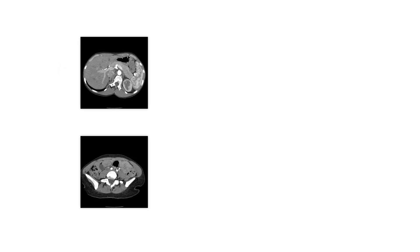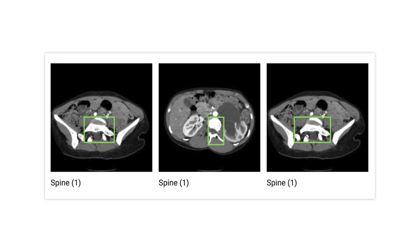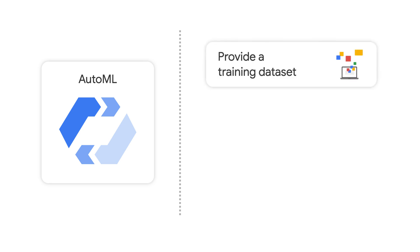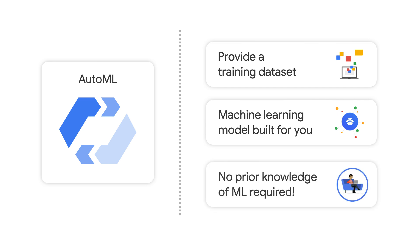First, we can import the images into Vertex AI as an object detection dataset. Vertex AI is Google Cloud's unified machine learning platform that makes it easy to build and train machine learning models on Google Cloud. Then, we can label these test images directly in Vertex AI using the cloud console — here's where we can label images that have a spine in them. Once our test dataset is ready, we can start to train our prediction model using AutoML, which does most of the work for us. All we have to do is provide a labeled training dataset, and Google Cloud automatically builds a machine learning model that leverages its powerful computing resources. No prior knowledge of machine learning is required.